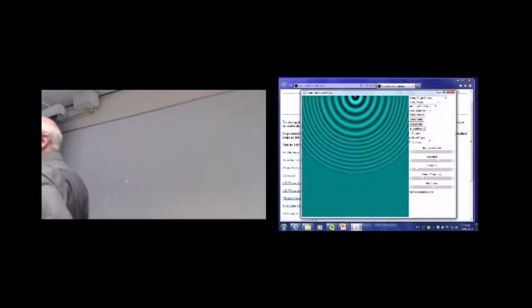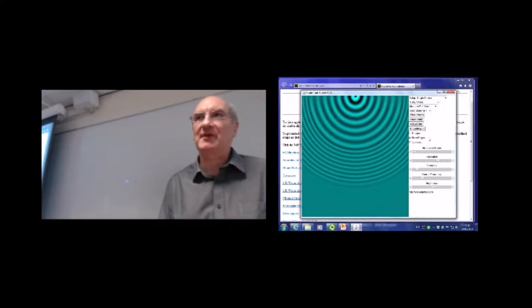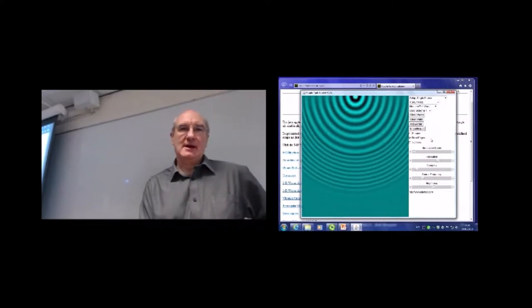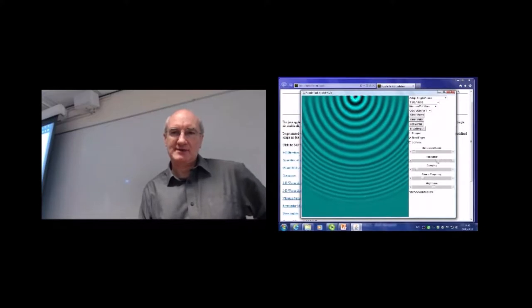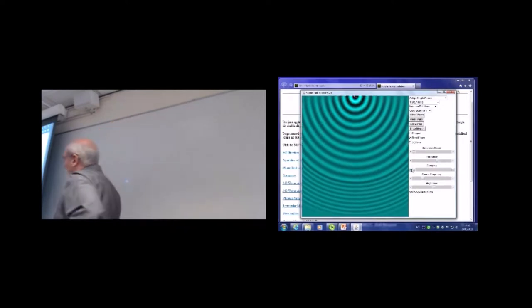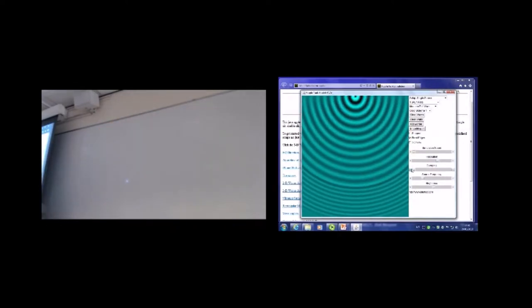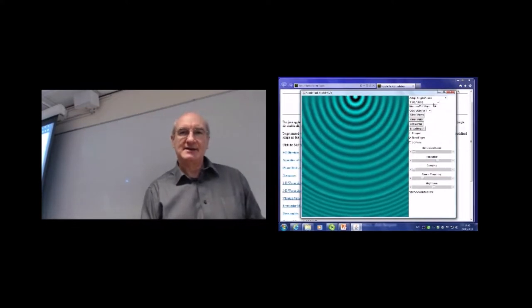So here's one point source producing circular waves in our simulated ripple tank. On their own, that's what they look like. We've got some damping going on here, which we don't really need, as they progress out. So the key thing now, of course, is to add a second source.